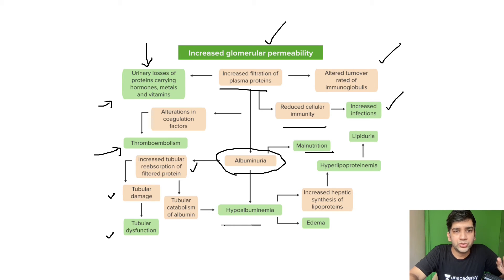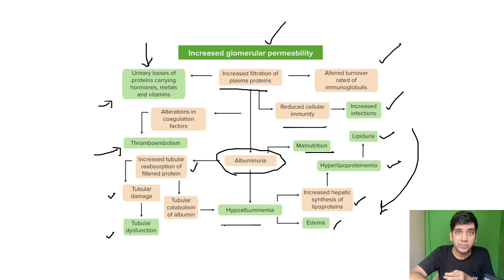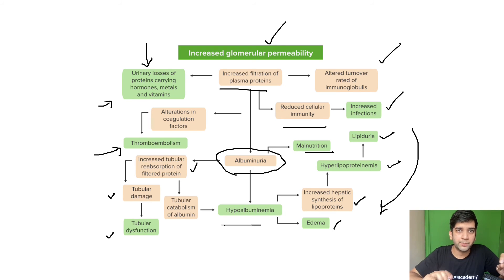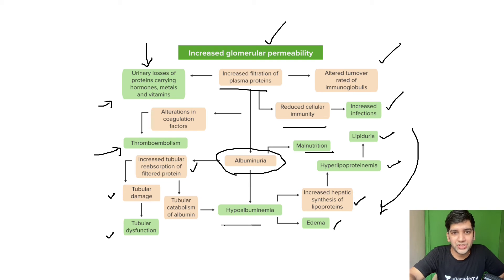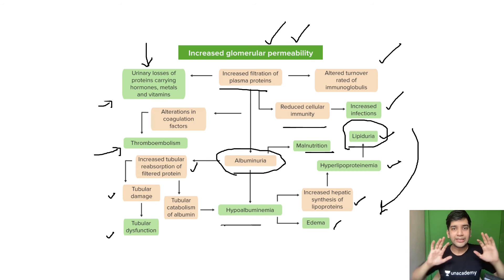Hypoalbuminemia causes edema and anasarca. Hypoalbuminemia also triggers increased hepatic synthesis of lipoproteins, causing hyperlipoproteinemia, which leads to hypercholesterolemia and ultimately lipiduria. There are two schools of thought on which comes first — lipiduria or hypercholesterolemia — and both are found in standard textbooks. Regardless, the key diagnostic finding is lipiduria, because hypercholesterolemia alone is not enough to diagnose nephrotic syndrome; fat in the urine confirms impaired glomerular permeability.